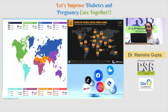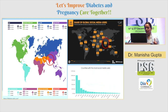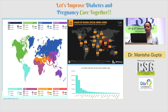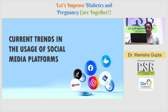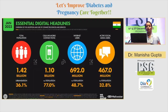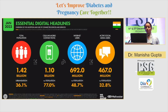This is globally how social media users look. I focus here on India — we have 16.1% in Southern Asia. India is the second largest population using social media; first is China and second is ours. The current trends in usage of social media platforms: total population has 1.42 billion, with 36.1% urbanization using these trends. Cellular mobile connections have been used by 1.1 billion users. Internet users are 692 million and active social media users are 467 million.